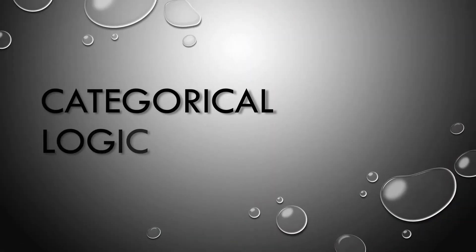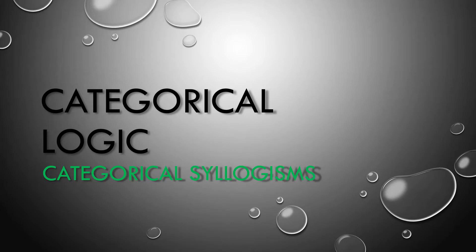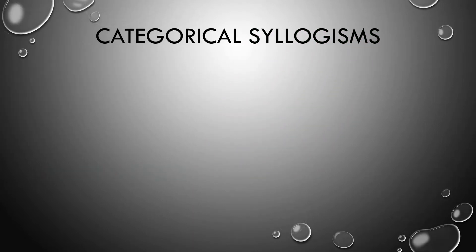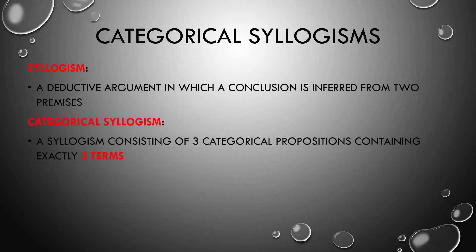There are different kinds of syllogisms, categorical being simply the first type we're going to explore. If you've never heard of a syllogism, it's a standard form of deductive argument where a conclusion is inferred from two premises. The categorical syllogism specifically consists of three categorical propositions and contains exactly three terms total.